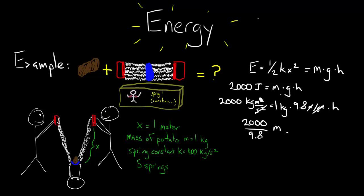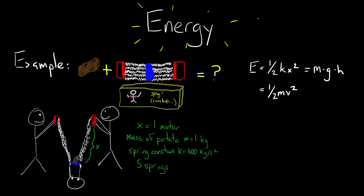So how fast is it going? Same process. 2,000 joules equals one-half mv squared, or 2,000 equals one-half times 1 times v squared. So 4,000 joules equals v squared.